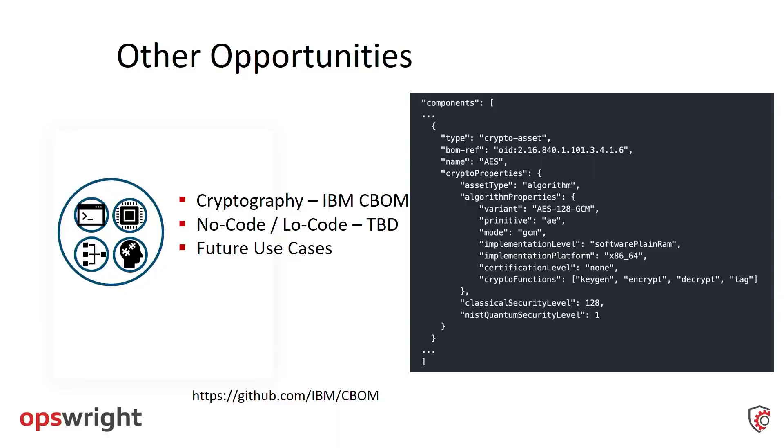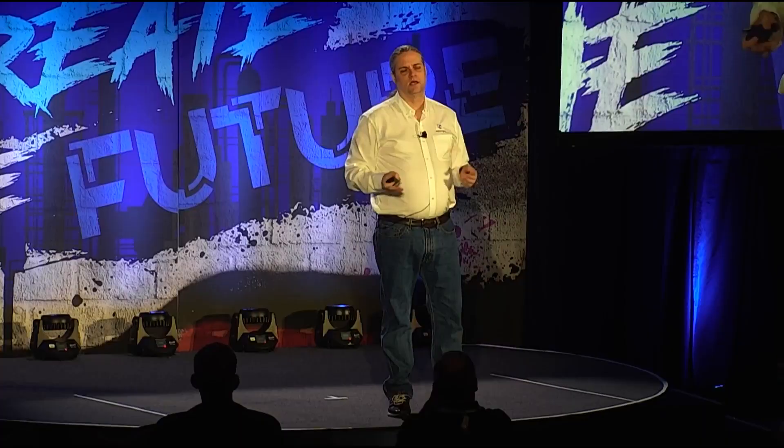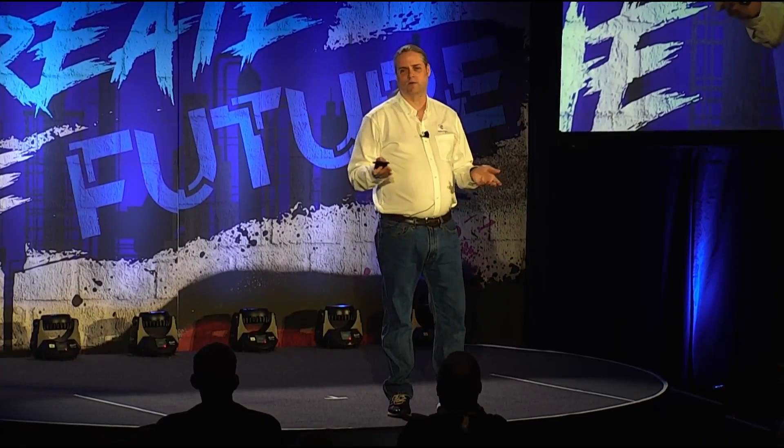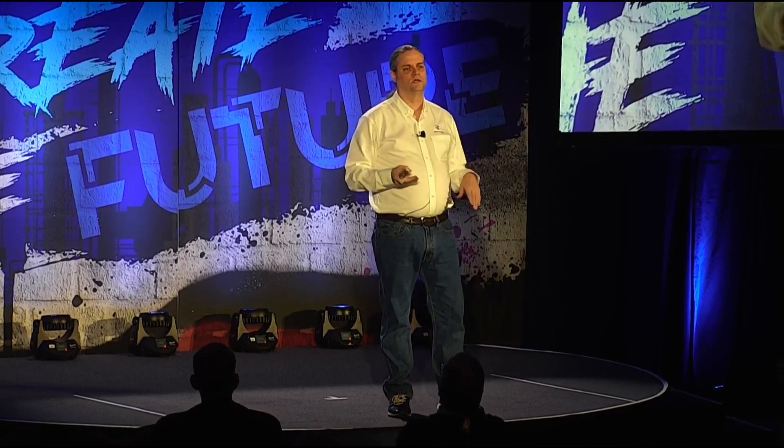Other areas being expanded: with the advent of no-code and low-code applications, it would be really useful to identify what goes into my software when it's a black box of drag-and-drop elements. What components are actually in my software when I use something like Bubble or Xano? This is another challenge being solved in the very near future, to gain better understanding of these black-box software components.